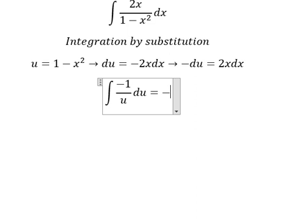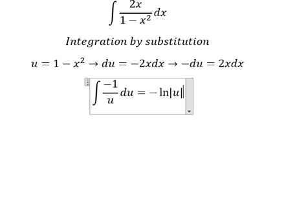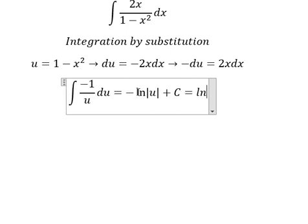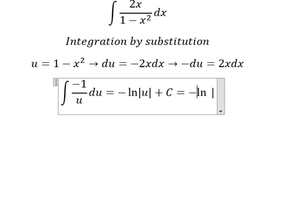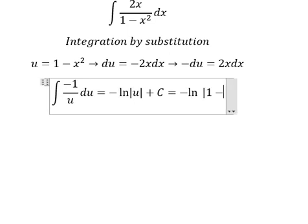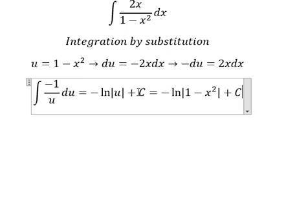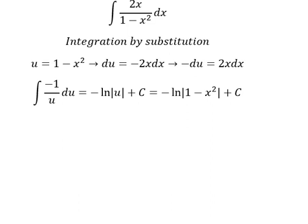And now we have the final answer: negative natural log of absolute value of u plus C, which equals negative ln of absolute value of 1 minus x squared. This is the end, thank you for watching.